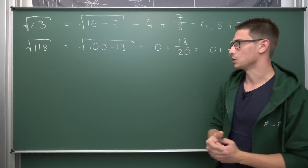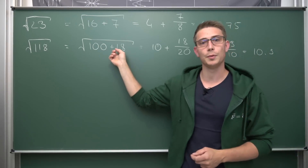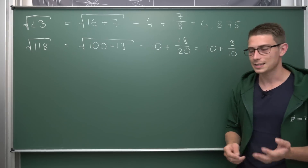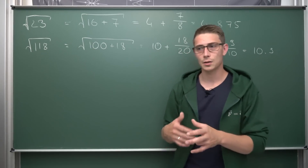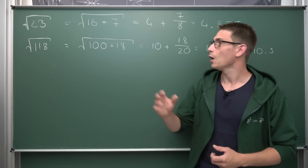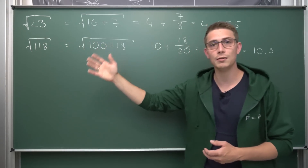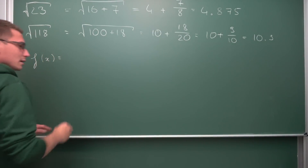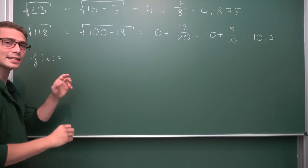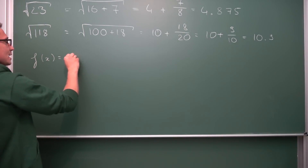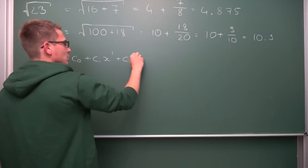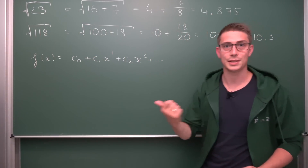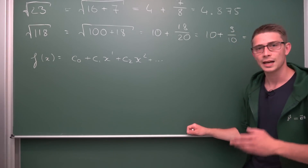Just one remark: the bigger the numbers get, the bigger our error is going to be. The larger the remainder is compared to 1, the bigger our error. This has to do with the so-called Taylor series expansion of the square root. The Taylor series gives a very precise approximation of a function expressed as an infinite polynomial — as c₀ plus c₁x plus c₂x² and so on. Methods to find such power series expansions include Taylor series or Maclaurin series expansions.